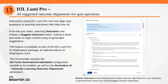Instructors using D2L LumiPro can now align quiz questions to learning outcomes with help from AI. From the Quiz Editor, selecting outcomes now reveals a Suggest Outcome button, making it faster and easier to align content using AI-generated suggestions. This feature is available as part of the D2L LumiPro for Brightspace package, an optional add-on to Brightspace Core. Previously, this option wasn't available for quiz questions, requiring manual alignment only. To enable, ensure your org is entitled to D2L LumiPro for Brightspace, the Generative AI tool is active, and instructors have the Generate Learning Outcome Alignments permission.